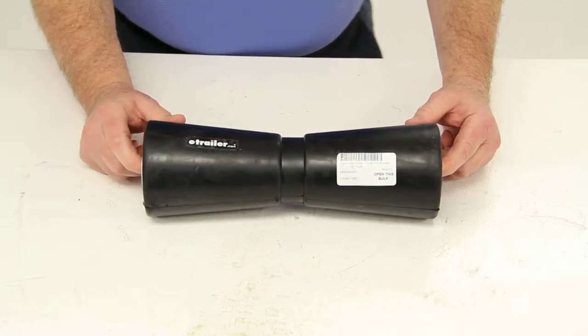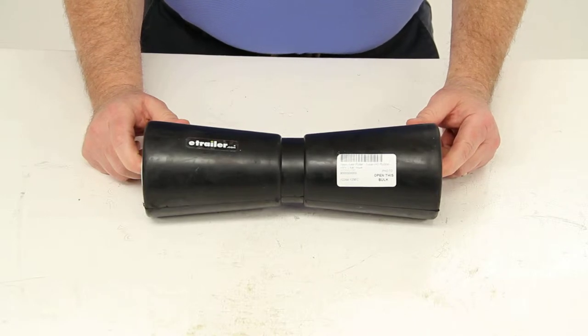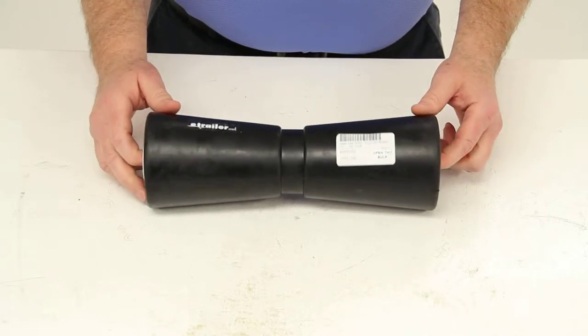Today we're going to review part number YR12244-125EC. This is the Yates keel roller.